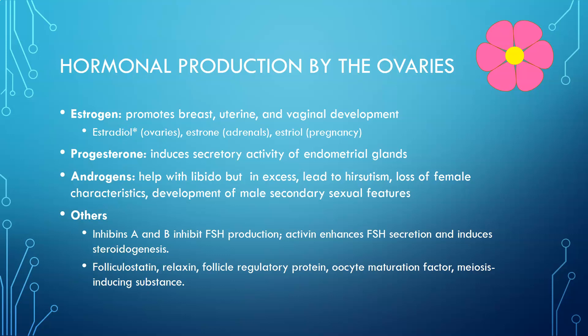Progesterone induces secretory activity of the endometrial glands. Its role is to prepare the uterus for pregnancy and to maintain that pregnancy early on. Progesterone tends to be secreted in higher amounts in the back half of the menstrual cycle, after ovulation has occurred, in preparation for possible fertilization and implantation of an embryo.